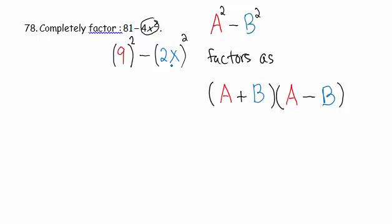Because 2x times 2x, 2 times 2 is 4, x times x is x squared. There's our 4x squared.